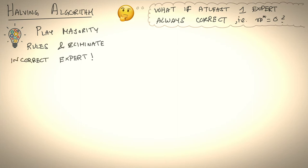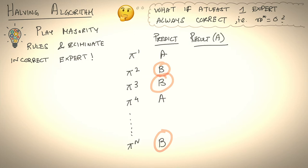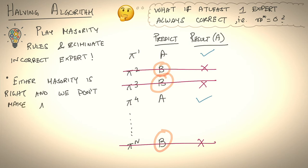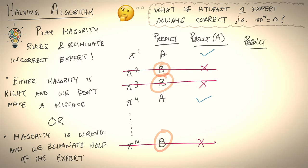In these settings, an intuitive algorithm is to simply play majority rules and eliminate experts that happen to be incorrect at every round. So how would this work? So we have our set of n experts. Every round, recall that they make predictions, either party A or party B, you go with the majority vote. So if a majority of the experts vote for party B, that's what you play. Then you get a result, which is party A won. So you keep around experts that were correct, and eliminate experts that were incorrect. So you can see where this is going. Either the majority rules is right, and we don't make a mistake, or the majority is wrong, and we have eliminated half of the experts. So very much the flavor of binary search. And in round two, you do the same thing again. You go with the majority and eliminate the ones that were wrong.